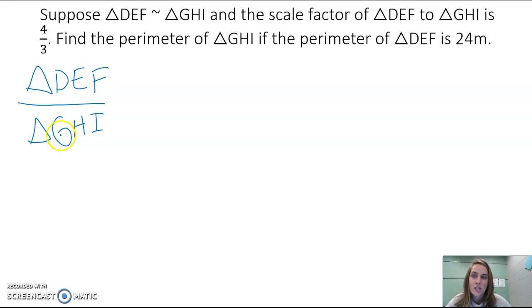DEF would be in the numerator, GHI would be in the denominator. And that scale factor - 'is' means equals - so we have four-thirds. There we have our scale factor.